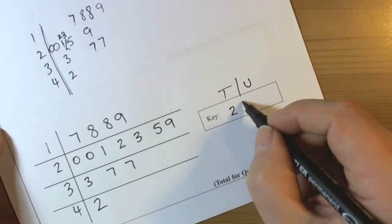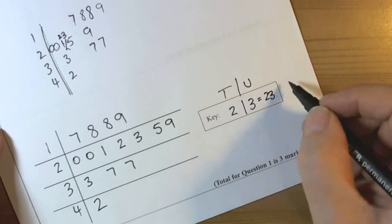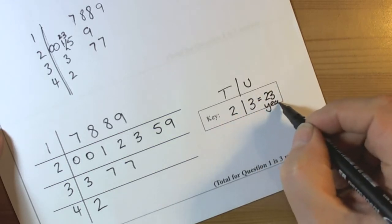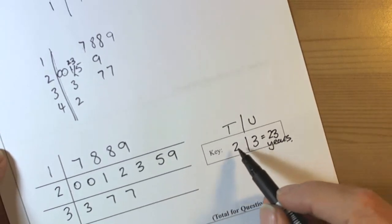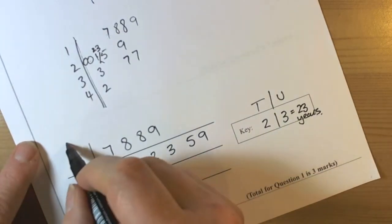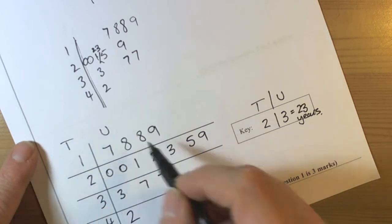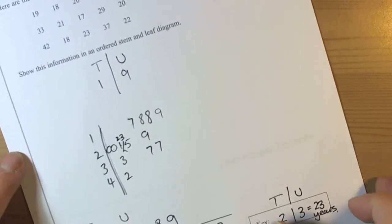So we could have 2 and then 3, and then we should be saying that that's equal to 23, and it's about ages. So really we ought to put the units down, so 2|3 is 23 years. So again, we split the numbers into tens and then units, and that's how we think about doing a stem and leaf diagram.